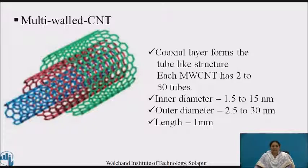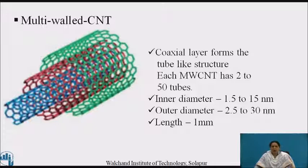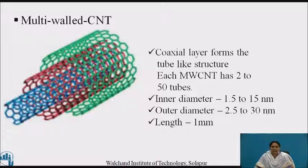Carbon nanotubes have novel chemical and physical properties: mechanically they are very strong, flexible, and can conduct more electricity. The helicity of the graphite sheet determines whether the carbon nanotube is a semiconductor or metallic. All the remarkable properties of carbon nanotubes have potential applications in composites, sensors, nano-electronics, and display devices. Carbon nanotubes have a variety of diameters, lengths, and functional group content, and are also available for industrial applications in bulk.